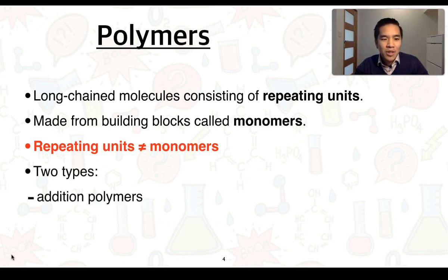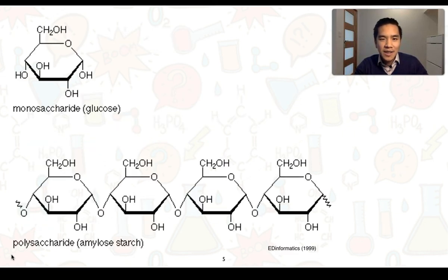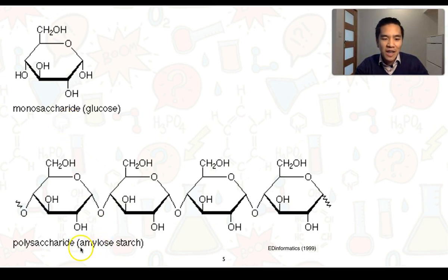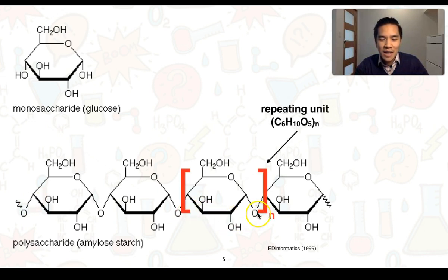There are two types of polymers: addition and condensation polymers. On this slide we can see some carbohydrates. At the top we have a glucose molecule, classified as a monosaccharide, and we have amylostarch which is classified as a polysaccharide or a polymer of glucose. From the polymer structure, we can represent the repeating unit using square brackets, and summing up all the atoms within those brackets gives us the formula C6H10O5, with a subscript N to indicate that this repeats N number of times.